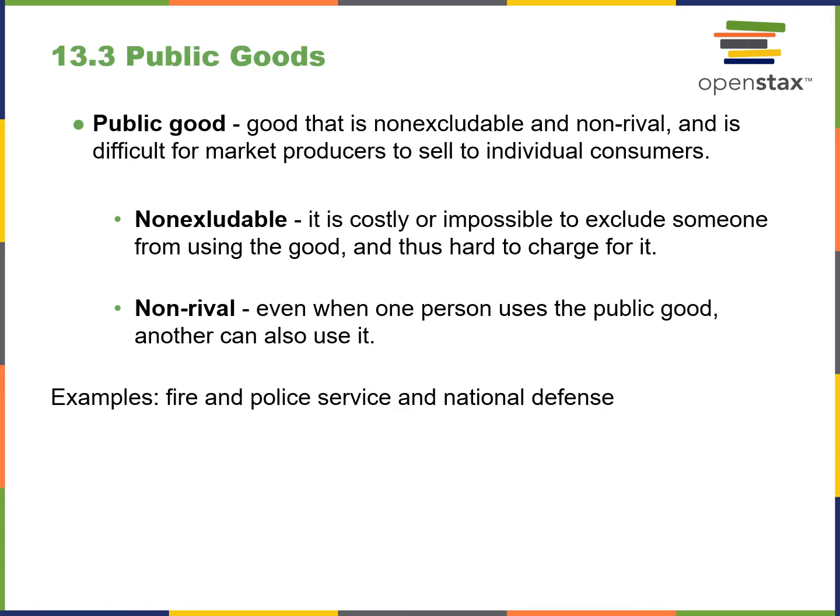What is a public good? A public good is non-excludable and non-rival, and it is difficult for market producers to sell to individual consumers. Examples include fire and police services and national defense. A public good could also be water, although there are arguments over water rights in certain regions of the country. Basically, things that nature provides to everyone as a whole would be considered a public good.